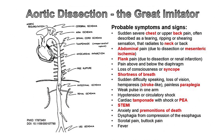Aortic dissection is often referred to as the great imitator because it can present with a wide range of symptoms and signs. These can include cerebral ischemia, aortic regurgitation, arm ischemia, spinal cord ischemia, tamponade, myocardial infarction, abdominal pain, flank pain, pain above and below the diaphragm, free rupture, loss of consciousness, syncope, intestinal ischemia, renal ischemia, shortness of breath, sudden difficulty speaking, loss of vision, hemiparesis, painless paraplegia, weak pulse in one arm, hypotension, circulatory shock, cardiac tamponade, STEMI, anxiety, premonitions of death, dysphagia, scrotal pain, buttock pain, leg ischemia, and fever.